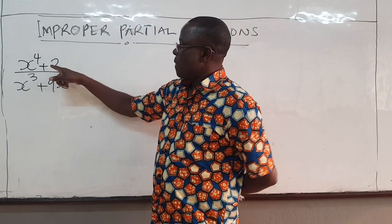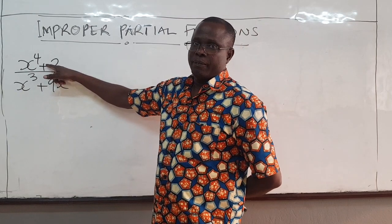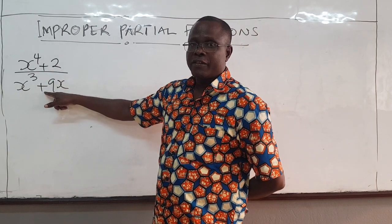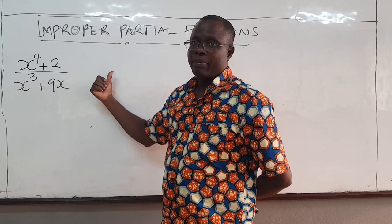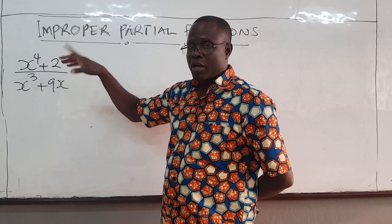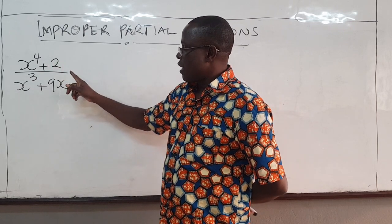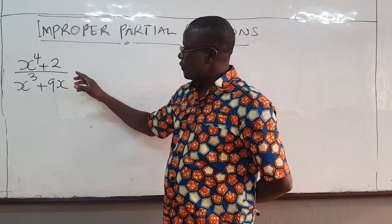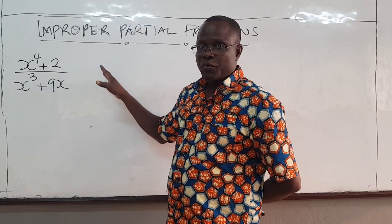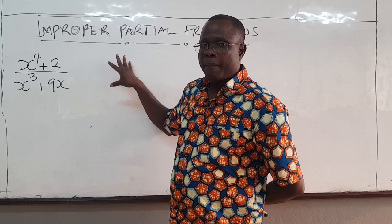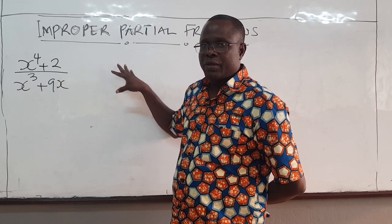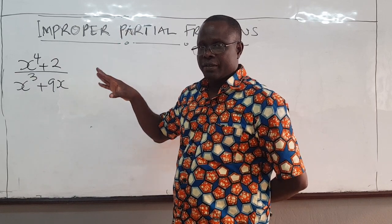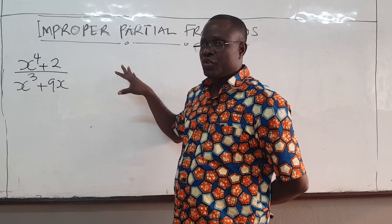So that is the case where the degree of the numerator is higher than the degree of the denominator. In that case you don't go ahead to apply the techniques you've learned already. What you do first is make sure that you use long division. The long division will eventually give you a proper rational fraction, and then you can apply any of the previous techniques to decompose that into partial fractions.